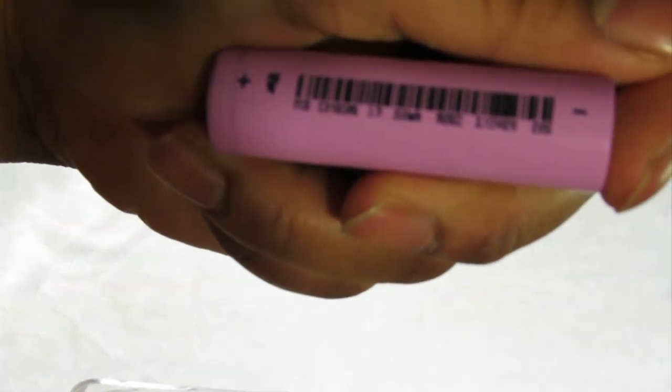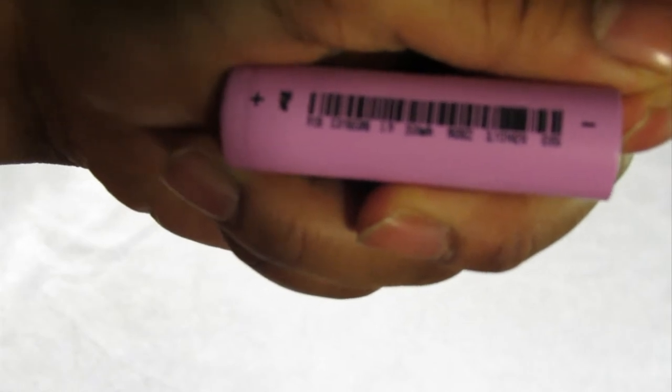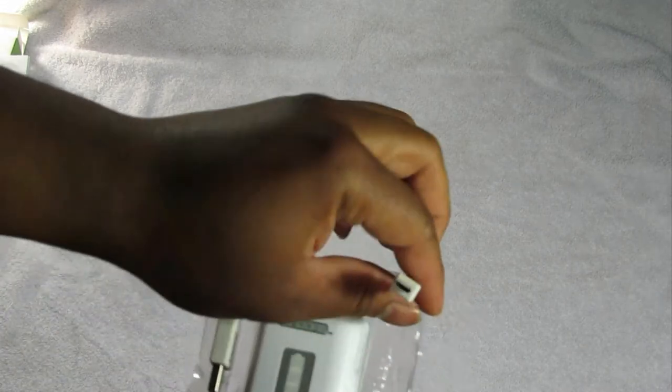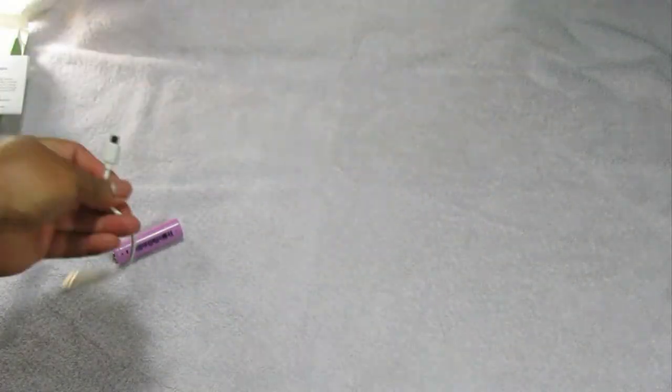But it actually has its own little button battery with a capacity of 2600 milliamp hours. And it actually lists it. It's very small. Not too sure if you're going to be able to make that out on camera. But it lists it at 2600 milliamp hours.